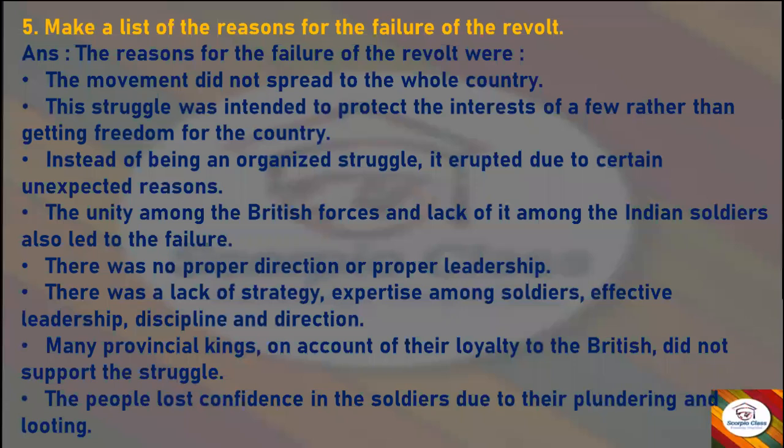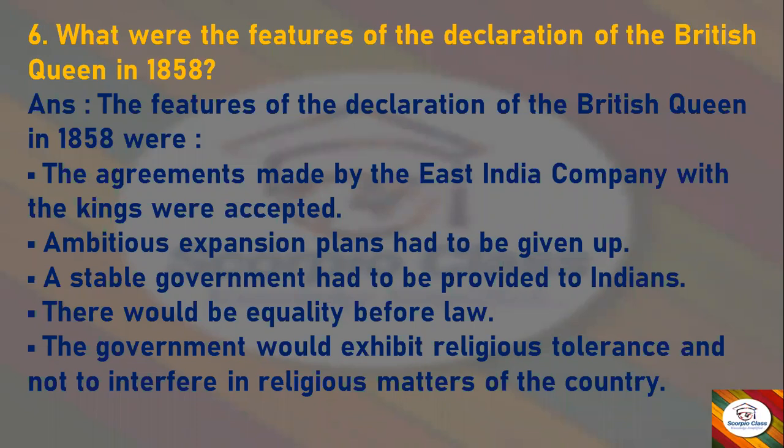Next question: What were the features of the declaration of the British Queen in 1858? Answer: The agreements made by the East India Company with the kings were accepted. Ambitious expansion plans had to be given up, and a stable government had to be provided to Indians. There would be equality before law. The government would exhibit religious tolerance and not interfere in the religious matters of the country. These were the features of the declaration of the British Queen in 1858.